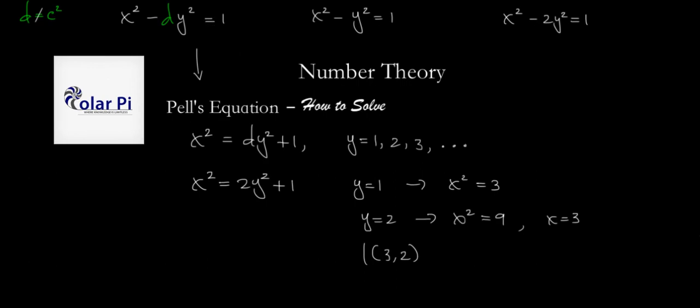If you keep trying more values of y, you'll have to go all the way to y = 12 before you find another solution. When y = 12, x² = 2(12²) = 2(144) + 1 = 289. I believe 289 = 17², so (17, 12) is another solution after (3, 2).